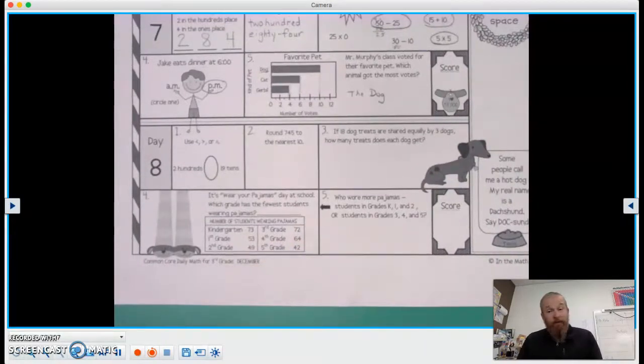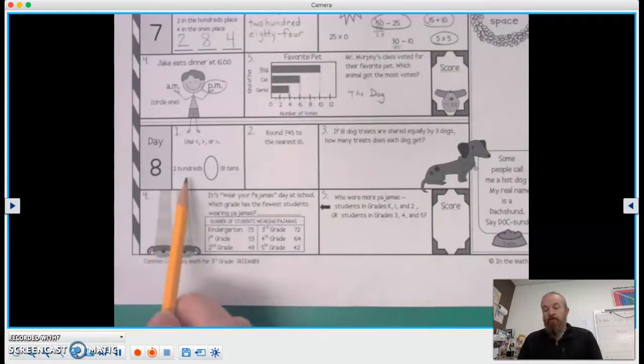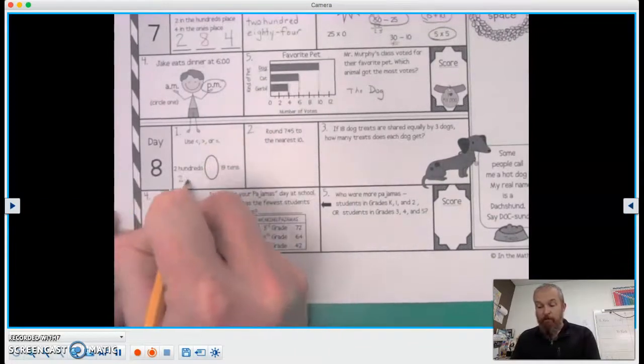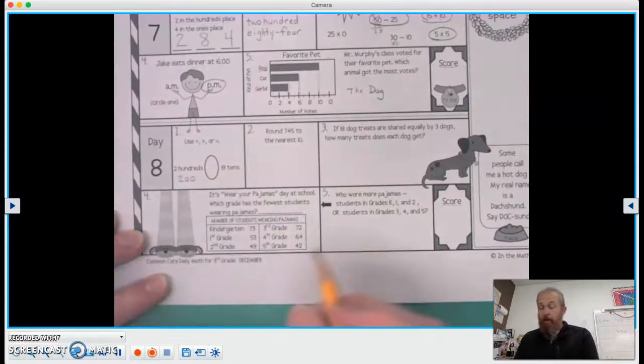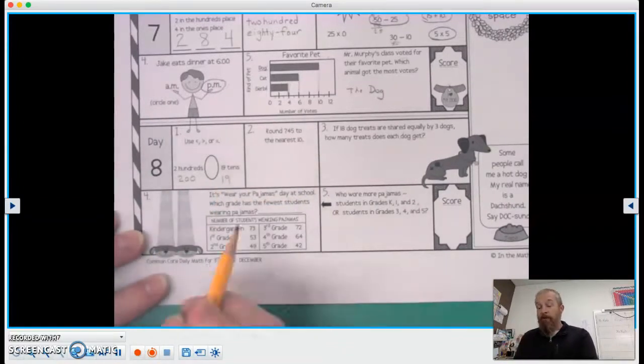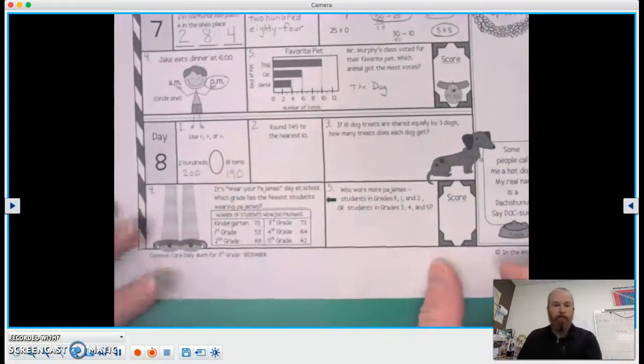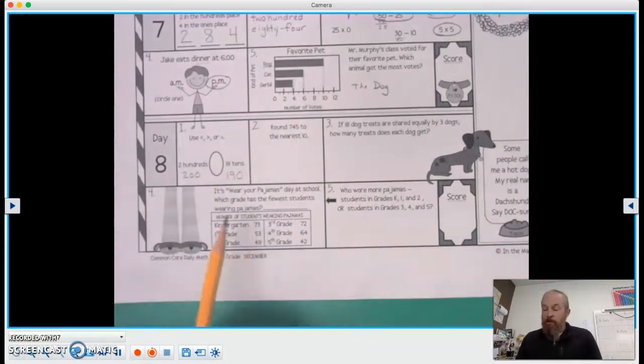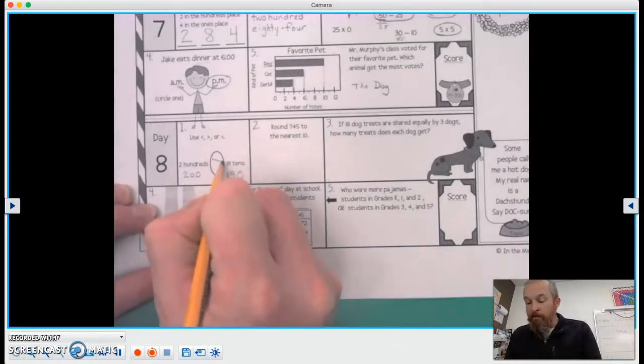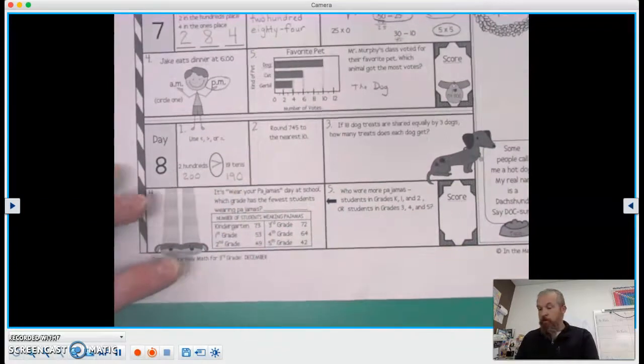We're gonna use less than, greater than, or equal to, and it says two hundreds versus 19 tens. So two in the hundreds column, two hundreds is simply two hundred. 19 tens, well there's 19, and to make it tens, like right now it's 19 ones, to make it 19 tens, we're gonna add a zero at the end. There we go. And I see 200 is greater than 190.